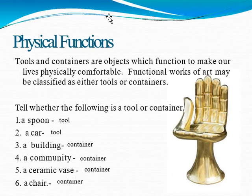Next, we go to the physical function of art. Tools and containers are objects which function to make our lives physically comfortable. Functional works of art may be classified as either tools or containers. For example: a spoon — is that a container or a tool? That is a tool. A car is a tool for transportation. A building is a container because, while it has a function, it is mainly a container. A community is a container, and a ceramic vase is a container.